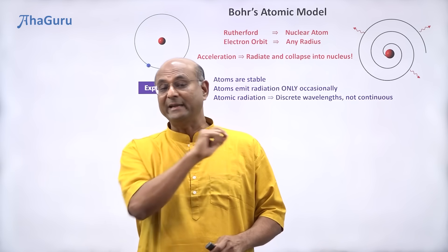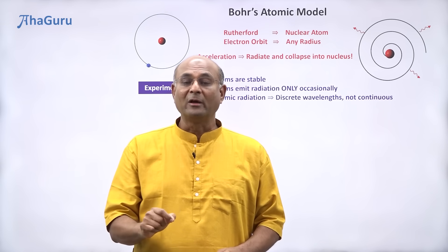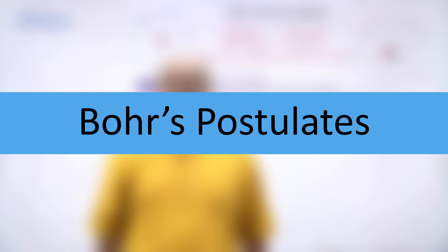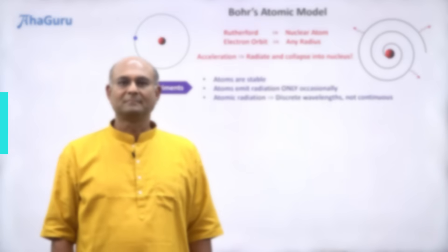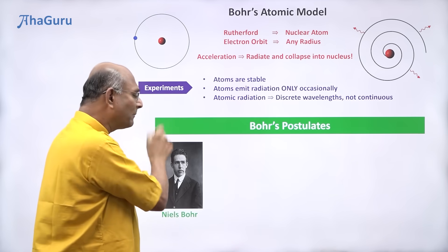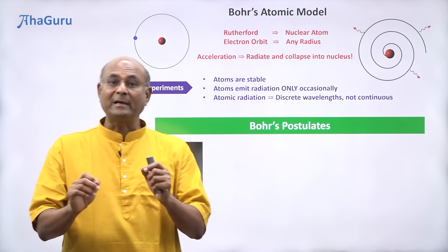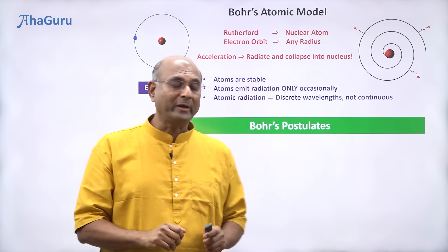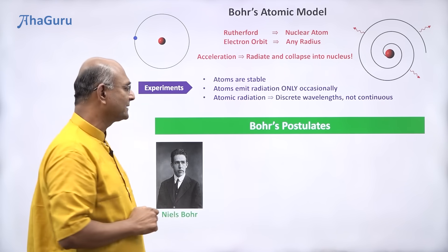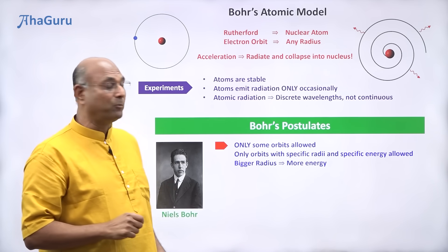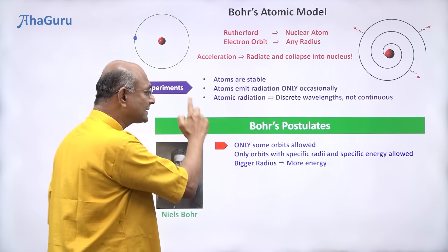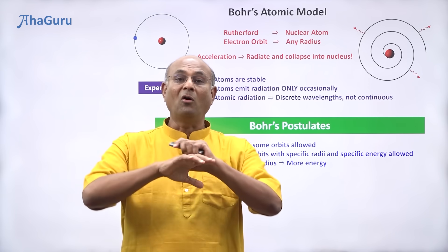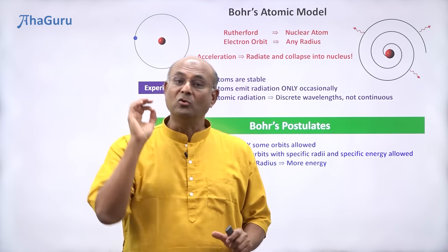This confusion was finally resolved by Niels Bohr when he came out with his postulates. Niels Bohr came out with a set of very important postulates that resolved the confusion in the atomic model. The first postulate that Bohr made was that only some orbits are allowed — there are certain orbits that are allowed, and all other orbits are not allowed.